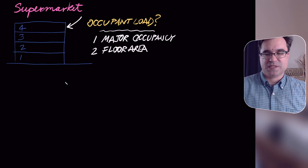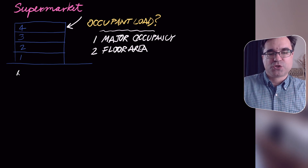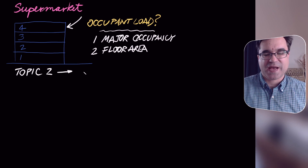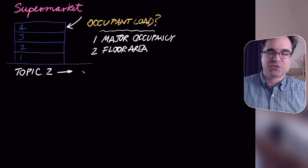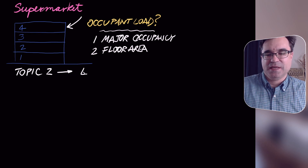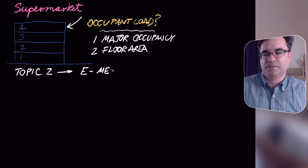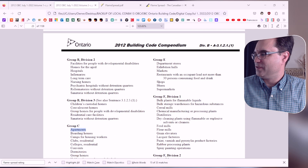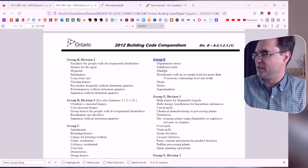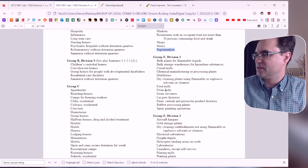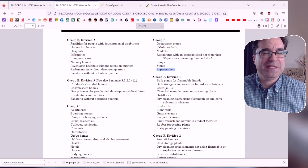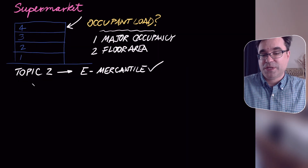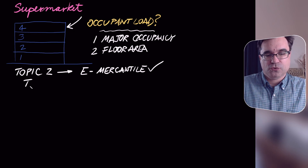Starting with the major occupancy — covered in topic two — I'll show exactly where I get the information. In Appendix A, under Group E which is mercantile, I find supermarkets listed right there. So a supermarket is an E occupancy, mercantile.